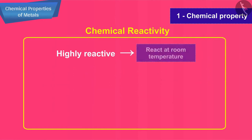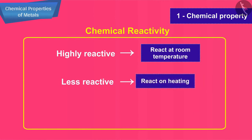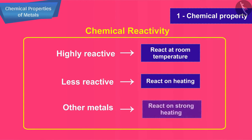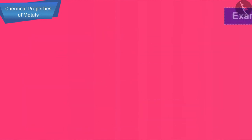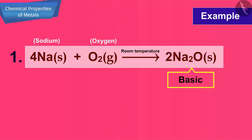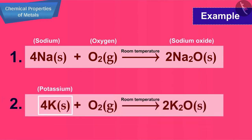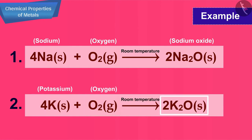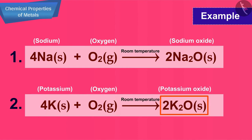Highly reactive metals react at room temperature. A less reactive metal will react on heating, whereas still other metals react on strong heating. For example, sodium metal reacts with the oxygen of air at room temperature to form a basic oxide called sodium oxide. Potassium metal also reacts with oxygen of air at room temperature to form basic oxide potassium oxide, K2O.